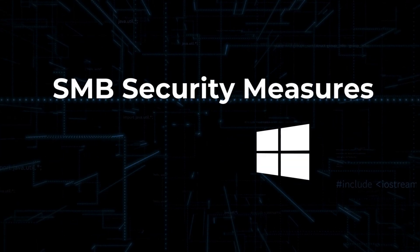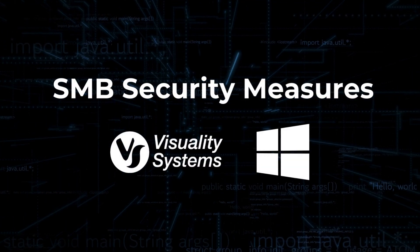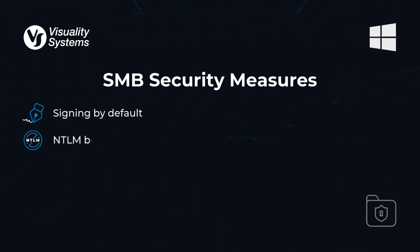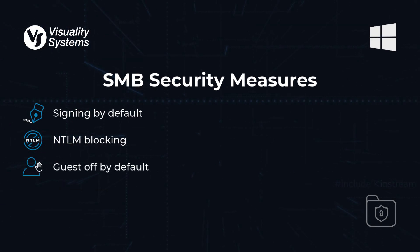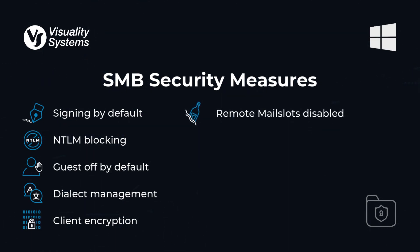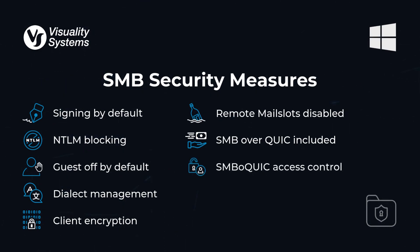The security measures introduced by Microsoft, all supported by Visuality Systems SMB protocol software libraries, include SMB signing required by default, SMB and NTLM blocking, insecure guest authentication is now off by default in Windows Pro Editions, SMB dialect management, SMB client encryption mandate, deprecation and disabling of remote mail slots. SMB over QUIC is now supported not only in the Azure edition as it was in Windows Server 2022, but also in the data center and standard editions starting from Windows Server 2025, along with SMB over QUIC client access control and support for SMB on alternative ports.